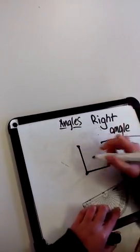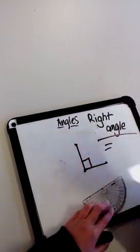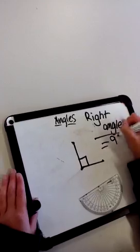Then just put a dot and put a square here, and the degrees are 90 degrees.